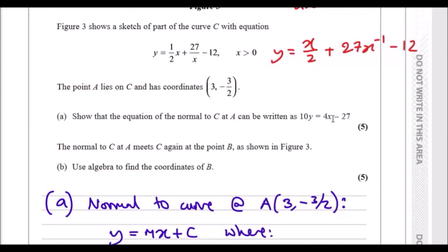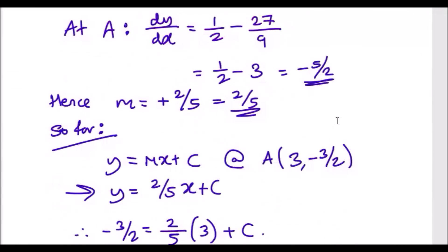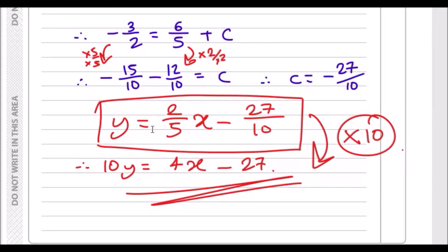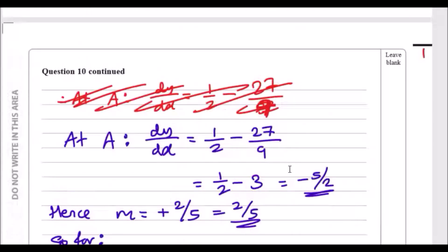Therefore we got it. Here is our equation of the normal, and we proved it. But they want it in a particular form, which is 10y equals 4x minus 27. To get there, once you get this equation, just multiply by 10, because they want 10y. So 2/5 times 10 will give us 4, because 20 over 5 is 4, and then this 10 cancels out so you get 27. That's literally it done.